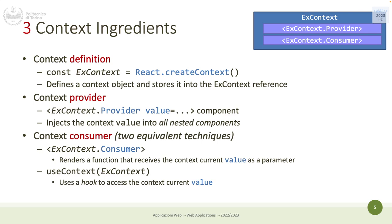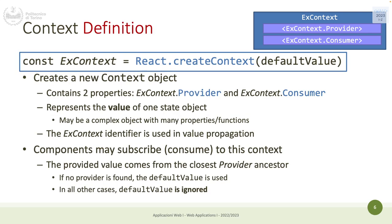You have two equivalent ways for consuming a context: one is the hook useContext, and the other is a component called ContextName.Consumer. To create a context you use React.createContext and you can give it a default value. This object allows you to have a provider and a consumer, and it can store one object.